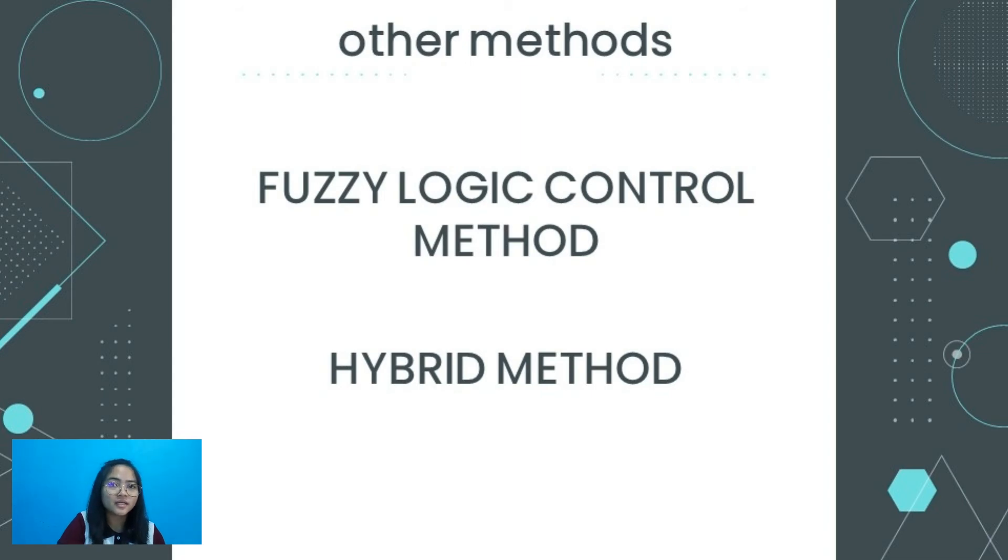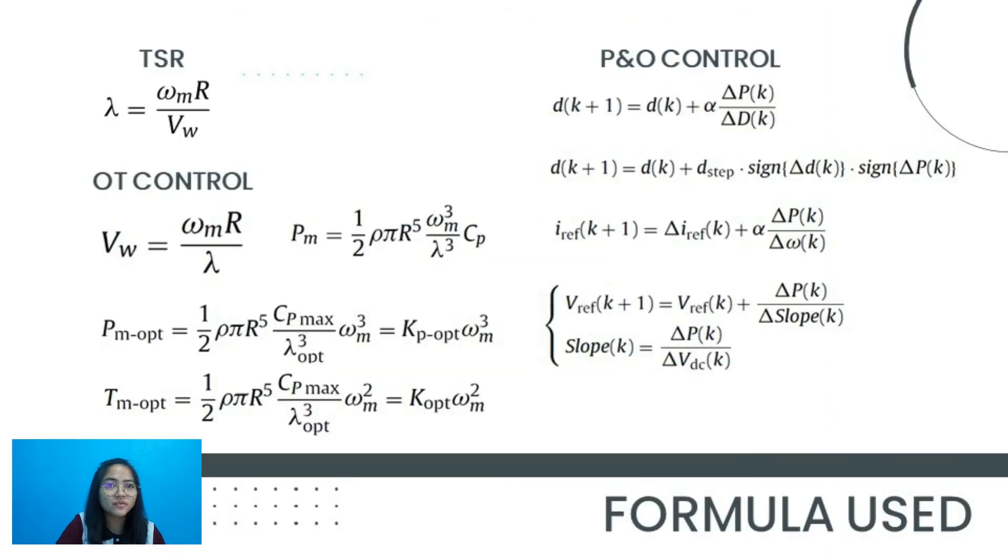In the next slide are the formulas previously used in the described MPPT techniques. The formulas are to find the wind speed, optimum power torque, turbine mechanical power, TSR, OT, and P&O. Since the study used these formulas, they used computational techniques and the numerical analysis of data, so its method is quantitative.